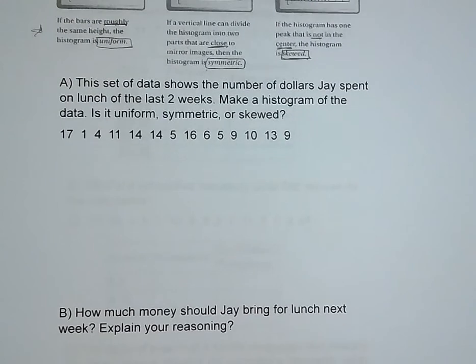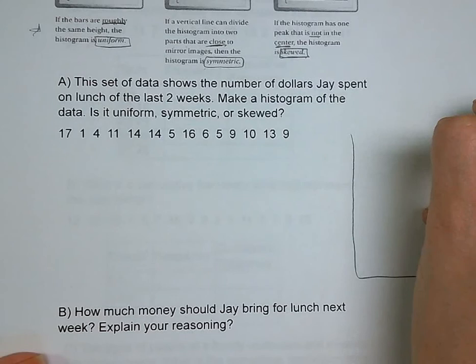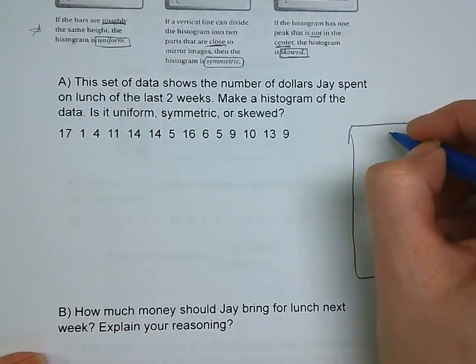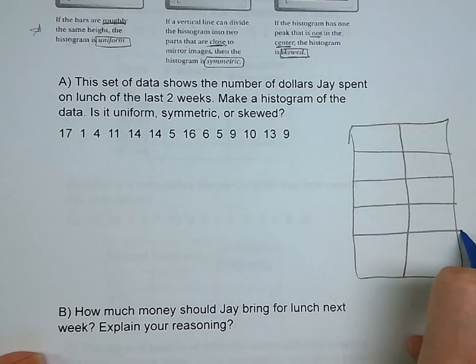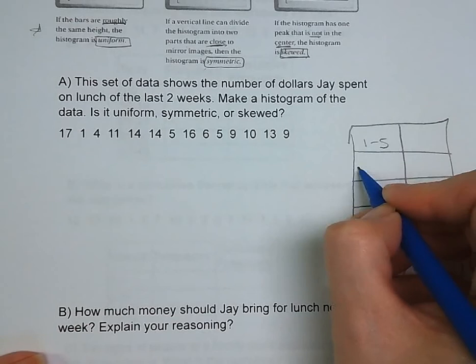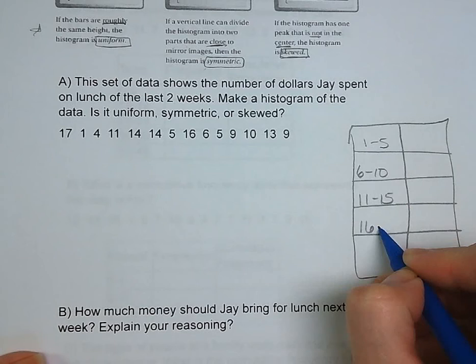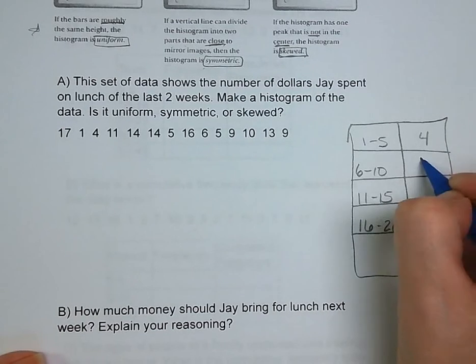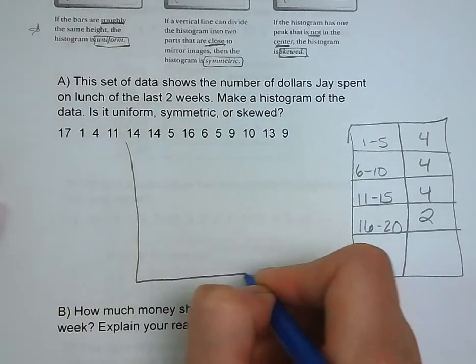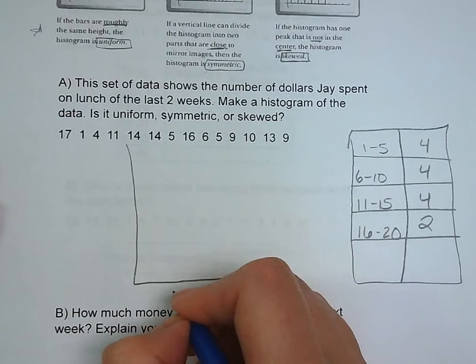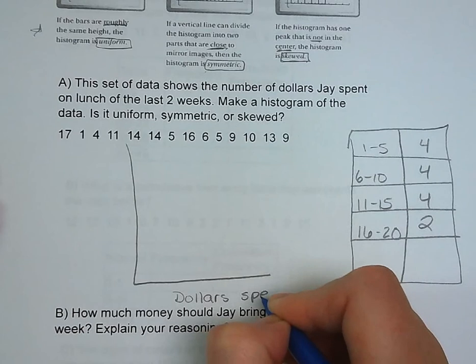The last one, if the histogram has a peak that is not in the center, we call that skewed. It means it's off to one side. It's not balanced. So you can really clearly see that one side clearly has more than the other. We're going to take a look at a set of data for dollars that Jay is spending on lunch for the last two weeks. We're going to want to make a histogram of it and decide what it looks like. So I went with 1 through 5, 6 through 10, 11 to 15, and 16 to 20 as my intervals. If we just count up our numbers, we've got 4, 4, 4, and 2.